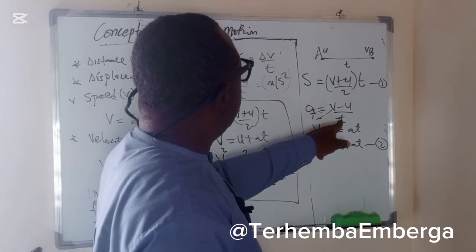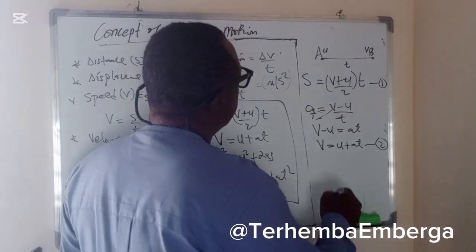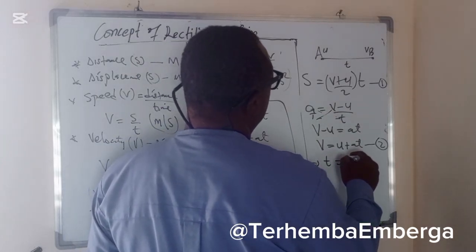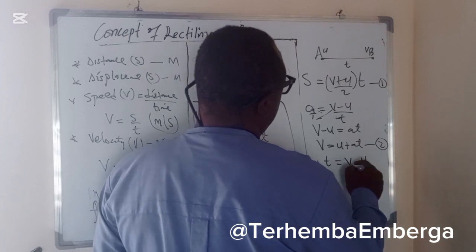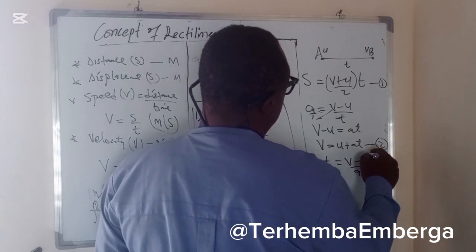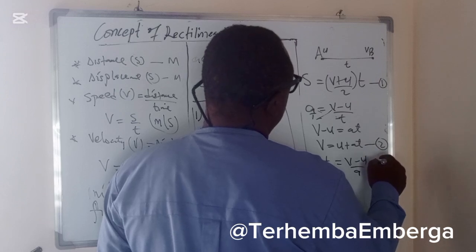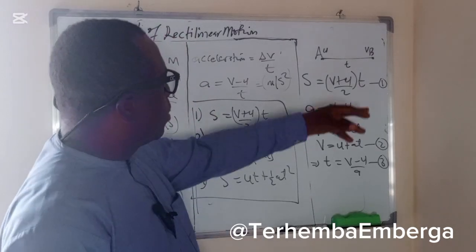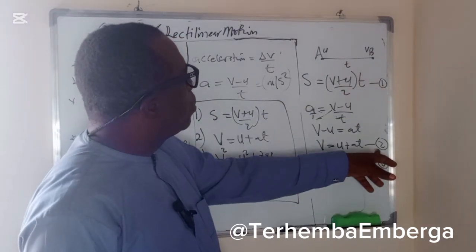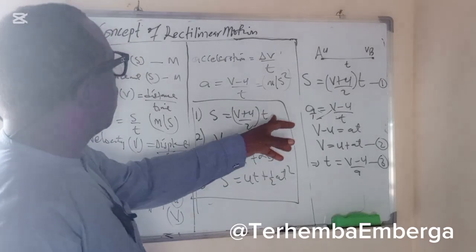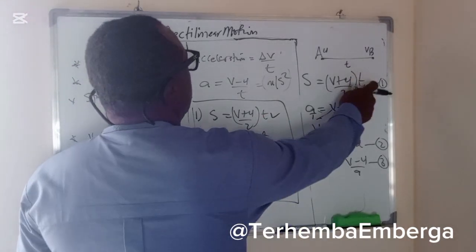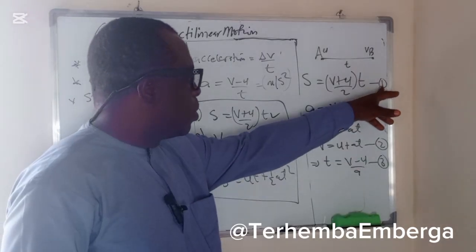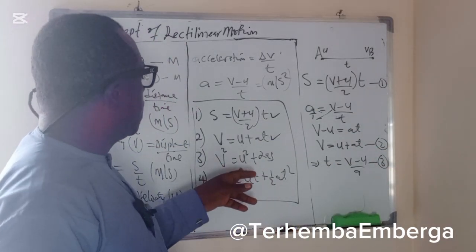From equation two, if we make t the subject, it implies that t is equal to v minus u all over a. We can call this equation three. So we'll be playing around between equations one, two, and three. We have already gotten equation two, so we'll use equations one, two, and three to derive the remaining two equations.